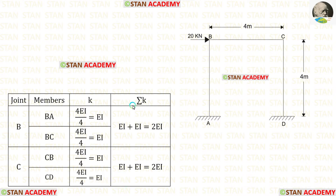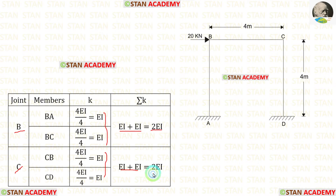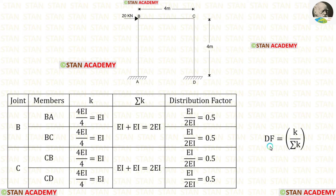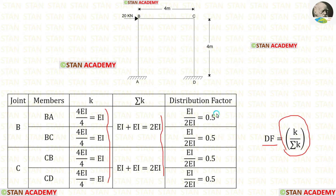Now let us find sigma K. At joint B, we add the two stiffness values to get 2EI. At joint C also, we add the two stiffness values to get 2EI. Now let us find the distribution factor using the formula K upon sigma K. We have calculated all K and sigma K values, and using the formula we can find the distribution factors.